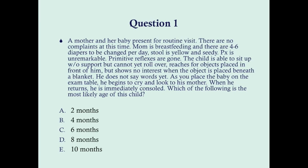Physical exam is unremarkable. Primitive reflexes are gone. The child is able to sit up without support but cannot yet roll over. The child reaches for objects placed in front of him but shows no interest when the object is placed beneath a blanket. He does not say words yet. As you place the baby on the exam table he begins to cry and look to his mother; when she returns he is immediately consoled. Which of the following is the most likely age of this child? A) two months, B) four months, C) six months, D) eight months, or E) ten months.